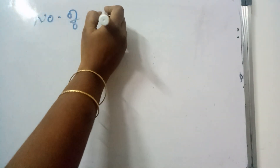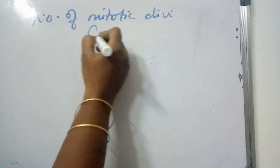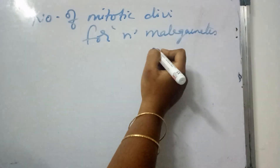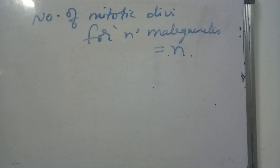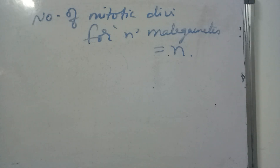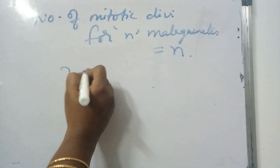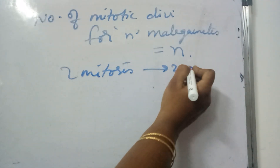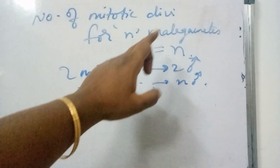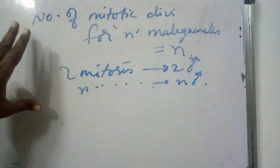Number of mitotic divisions required for formation of male gametes — how many male gametes are formed, those many mitotic divisions are required. From one pollen grain, two mitotic divisions occur and two male gametes are formed. So N mitosis will give rise to N male gametes. Number of mitotic divisions required for formation of N male gametes is equal to N. That is a very important point to remember.